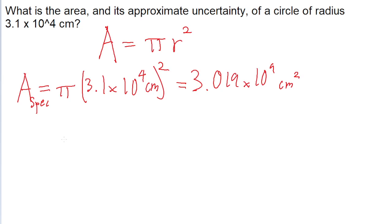So this is the area of the circle, but the problem is also asking for an approximate uncertainty. The problem doesn't actually tell us what the uncertainty of the circle is. So usually in cases like this where we're not given the uncertainty,